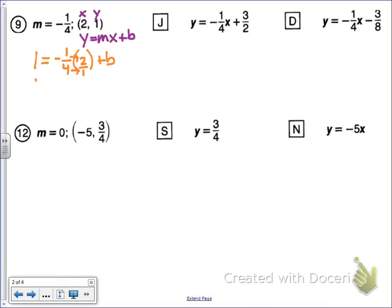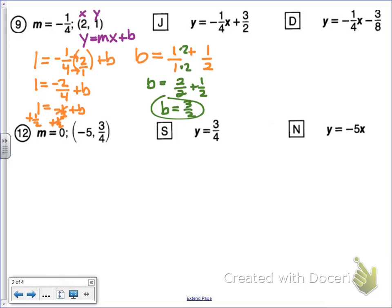Let's put an invisible one under two and multiply straight across. We get one equals negative two over four plus b. Negative two over four reduces to negative one over two. To get b by itself, we add one-half to both sides, so b equals one plus one-half. To add these numbers together, I have to make both a fraction, so I put an invisible one below. To add fractions, we need common denominators. My common denominator is two, so I multiply by two on both top and bottom. I get two over two plus one over two. Two plus one equals three, so my y-intercept is three over two.